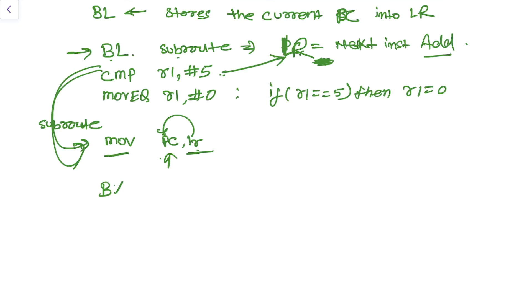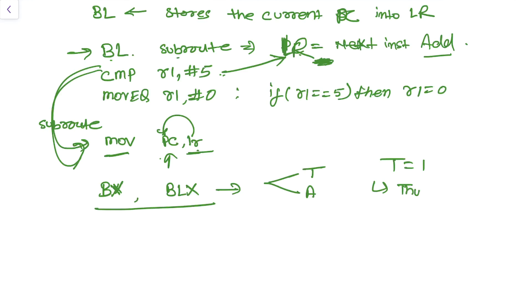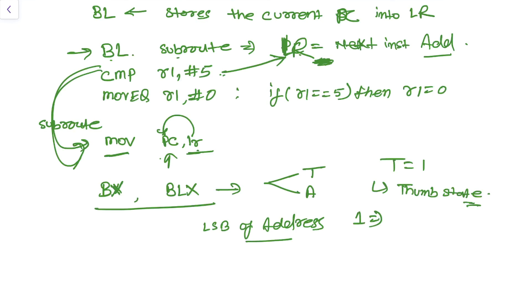We also have BX and BLX type instructions. These branch instructions additionally change the processor state. There are two states: the Thumb state and the ARM state. In the CPSR register, if T equals 1, the processor is in Thumb state. The state is determined by the least significant bit (LSB) of the branch address: if LSB equals 1, the processor switches to Thumb state; if LSB equals 0, it switches to ARM state.